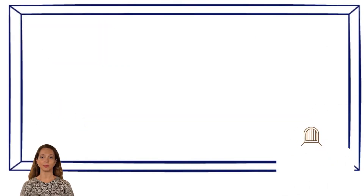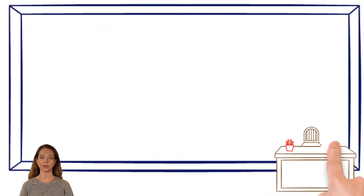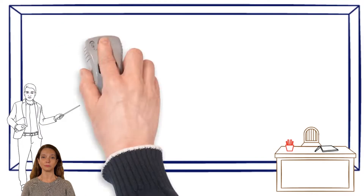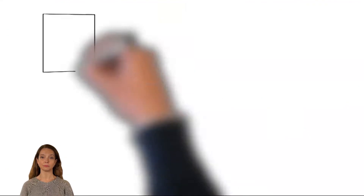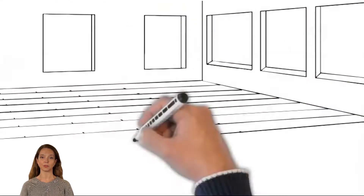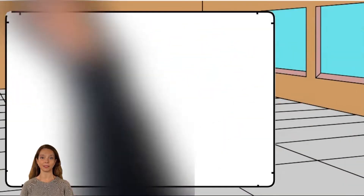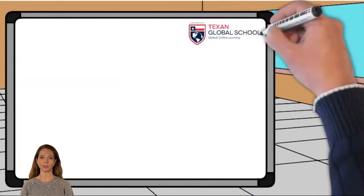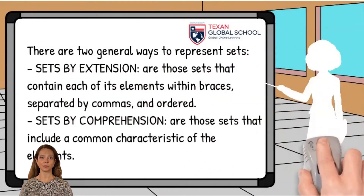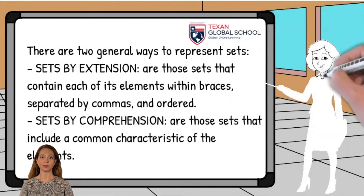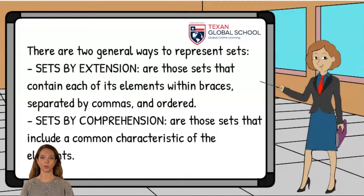Texan Global School: Sets by Extension and Comprehension. There are two general ways to represent sets: by extension and by comprehension. By extension, sets contain each of its elements within braces, separated by commas and ordered. Sets by comprehension are those that contain a common characteristic of the elements.